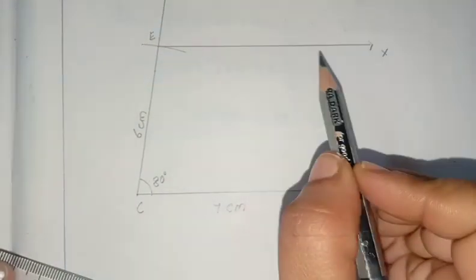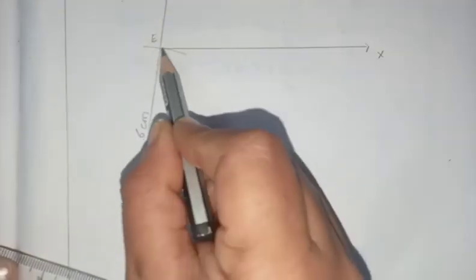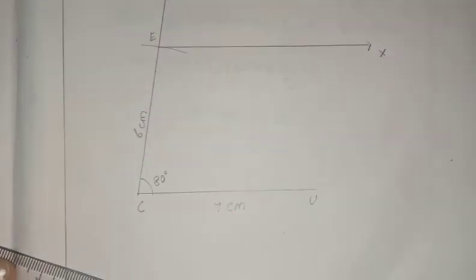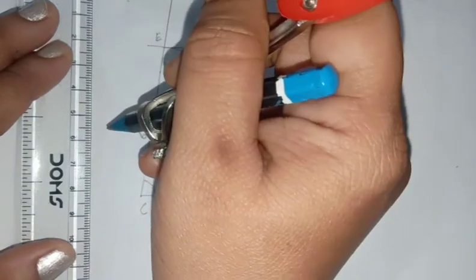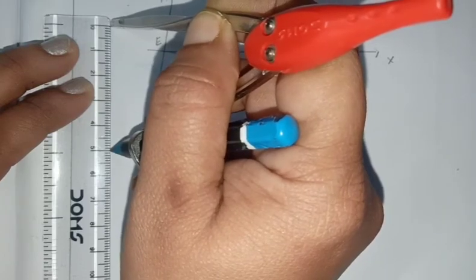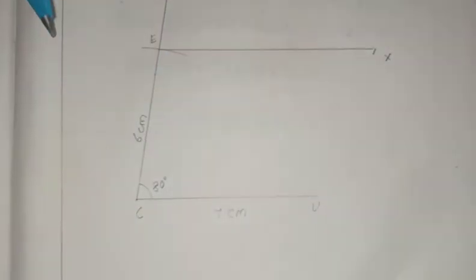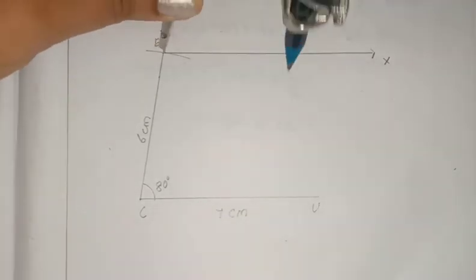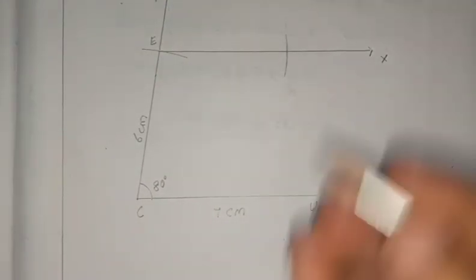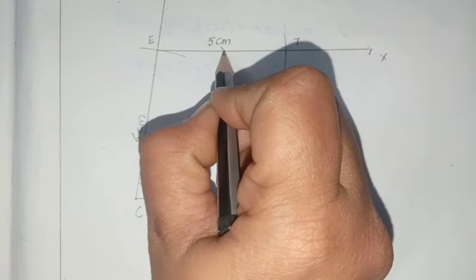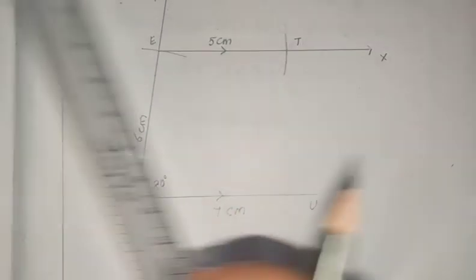We need TE equal to 5 cm. E is here, and T will be on ray EX. From point E, take the scale and measure 5 cm, then keep the compass on point E and draw the arc. Name it T and write 5 cm. Since CU is parallel to ET, draw arrow marks to show both are parallel lines. Now join UT.